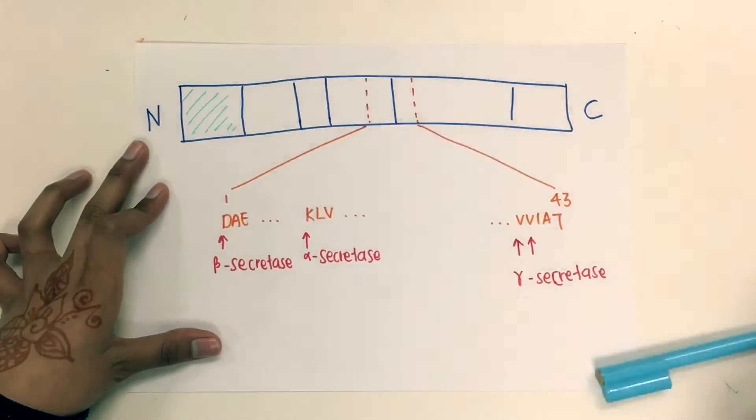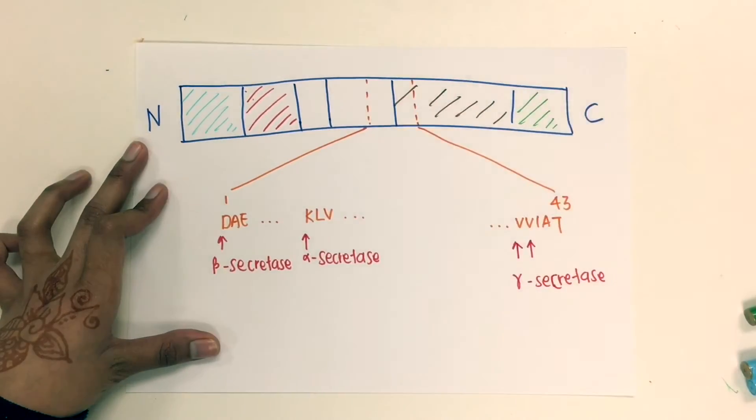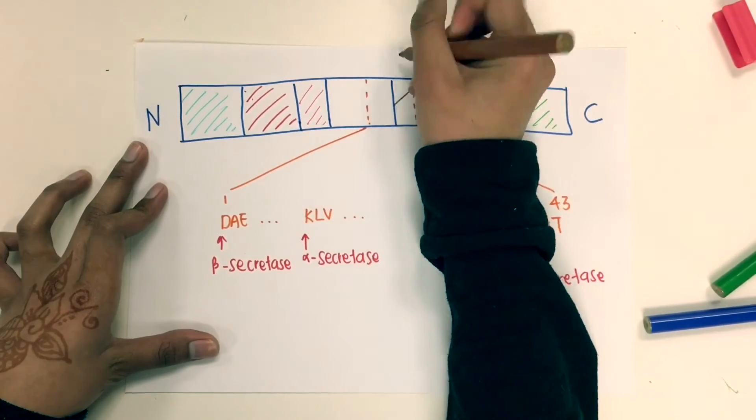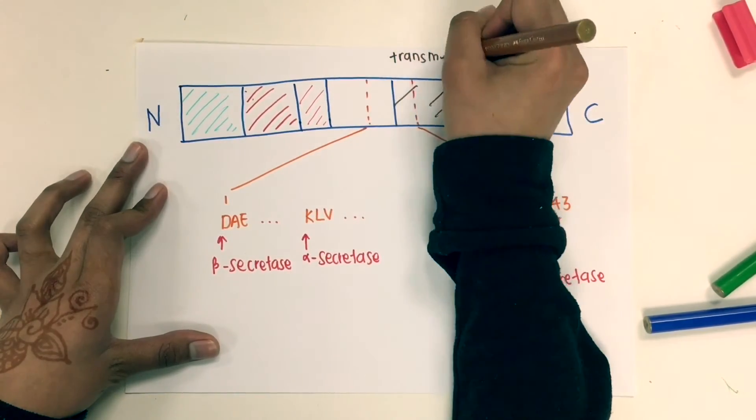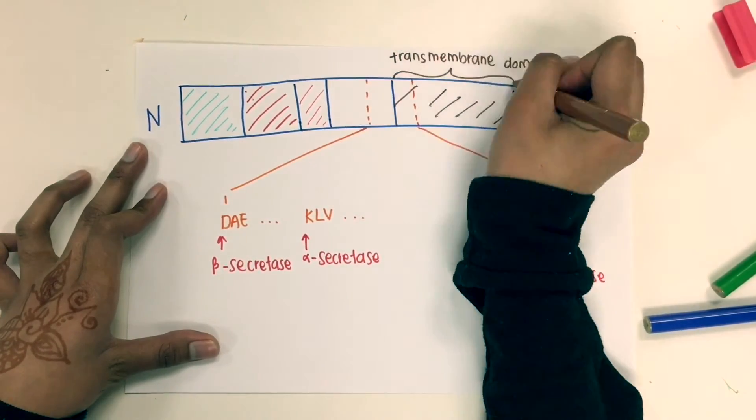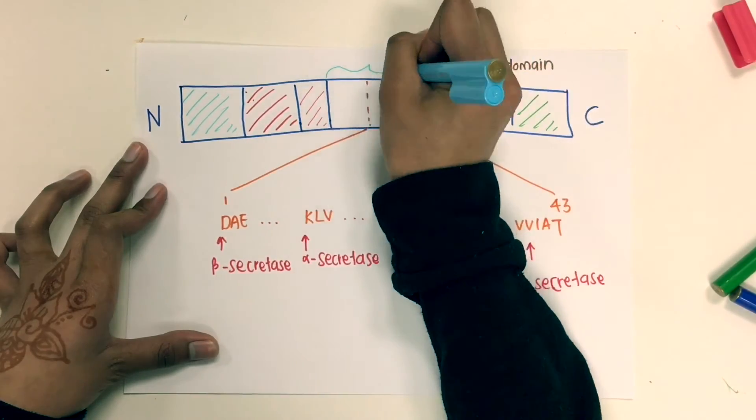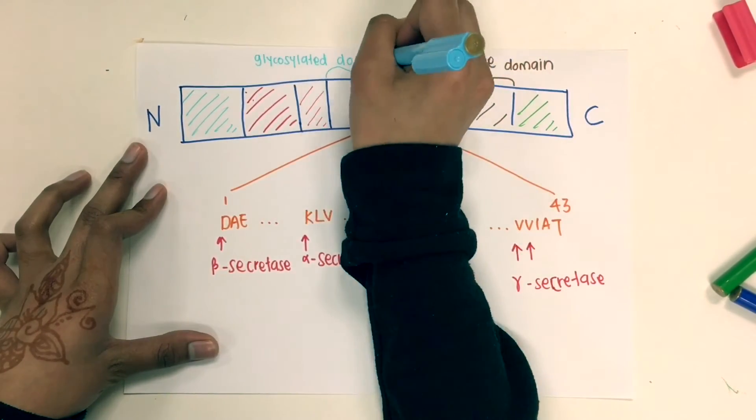In particular, the researchers propose to use CRISPR gene editing technology to reduce the activity of beta secretase. The gene that codes for the enzyme is located between the transmembrane domain and glycosylated domain.